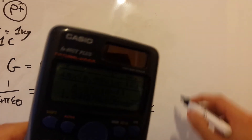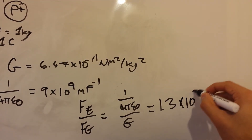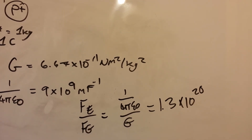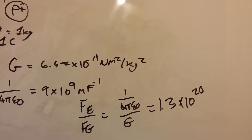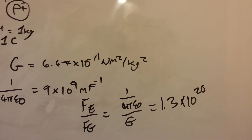You can see that the electric force is 20 orders of magnitude bigger than the gravitational force. That's a big difference. I hope you enjoyed this video and it gave you some ideas about the differences and similarities between the two forces. The gravitational force's strength is basically nothing compared to the electric force. See you in the upcoming videos.